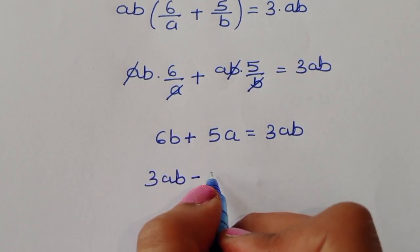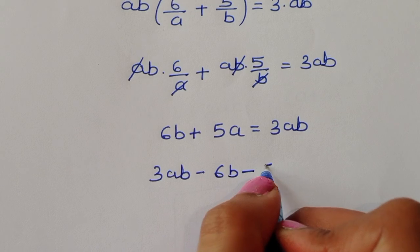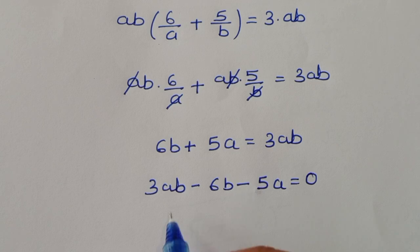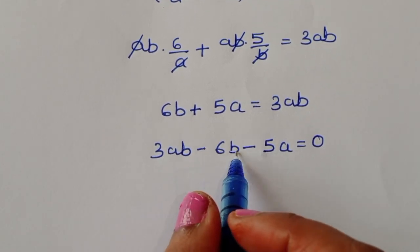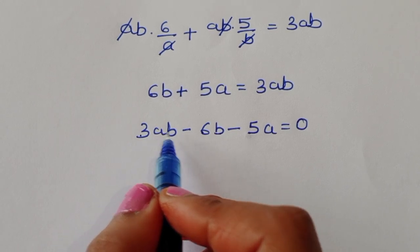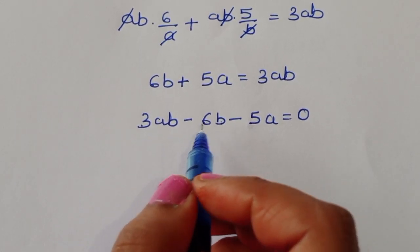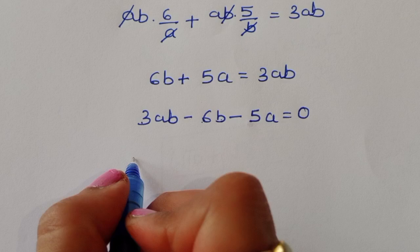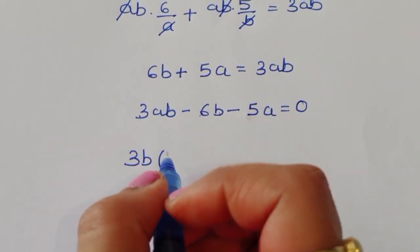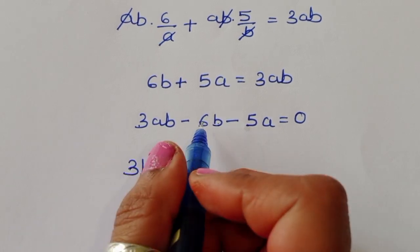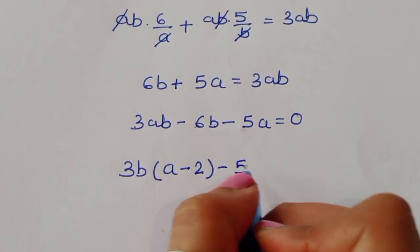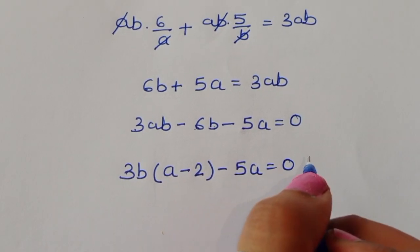Rearranging: 3ab − 6b − 5a = 0. We can take 3b common from the first two terms, giving 3b(a − 2), and the remaining term is −5a.